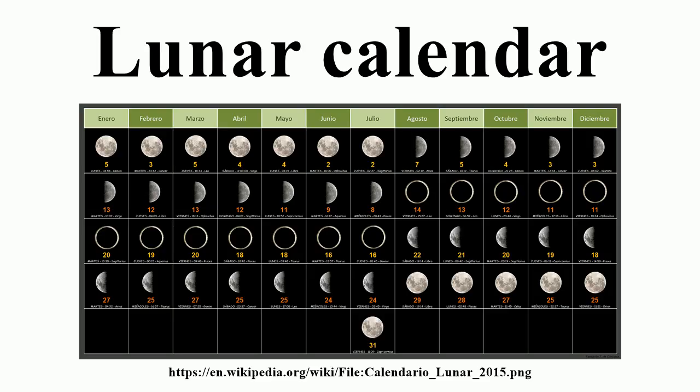Some other calendar systems used in antiquity were also lunisolar. All these calendars have a variable number of months in a year. The reason for this is that a solar year is not equal in length to an exact number of lunations. So without the addition of intercalary months the seasons would drift each year. To synchronize the year, a 13-month year is needed every two or three years.